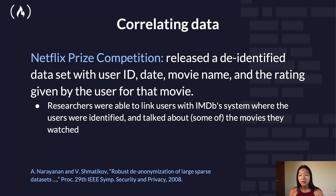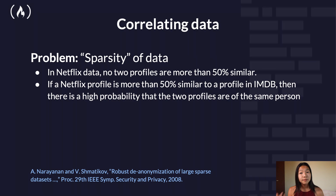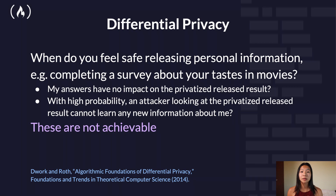Even when there is an anonymized dataset, there's such a thing as correlating data. Netflix once held a competition where they released a de-identified dataset with the user ID, date, movie name, and the rating given by the user for that movie. Researchers were actually able to link the users with the IMDB system where the users were identified and talked about some of the movies they watched. The problem was the sparsity of the data. In Netflix data, no two profiles are more than 50% similar. If a Netflix profile is more than 50% similar to a profile in IMDB, then there's a high probability that the two profiles are the same person.